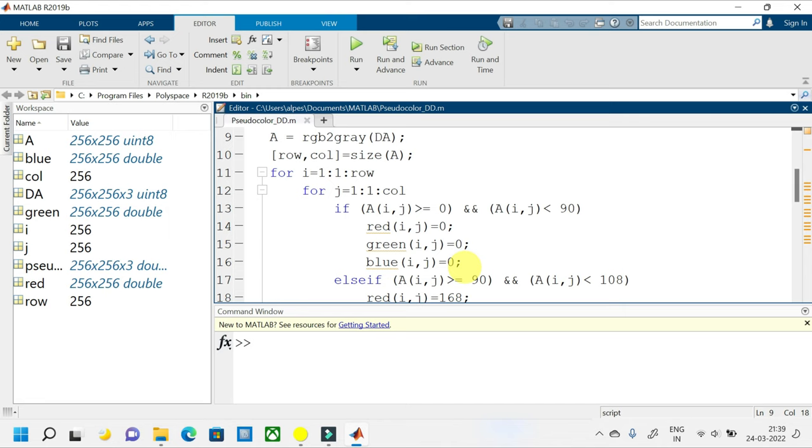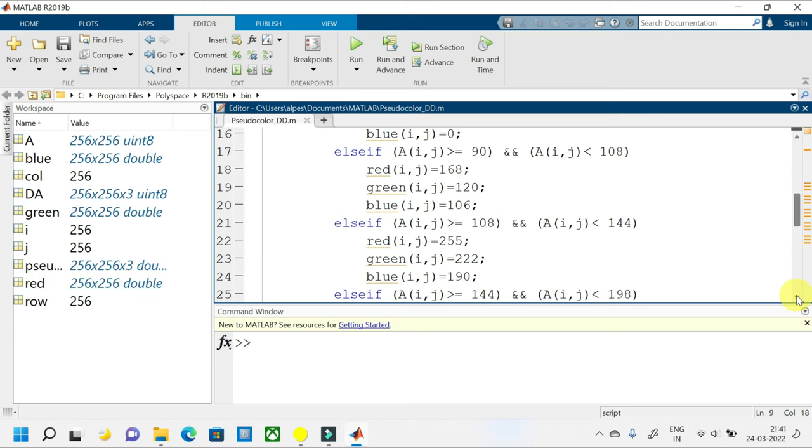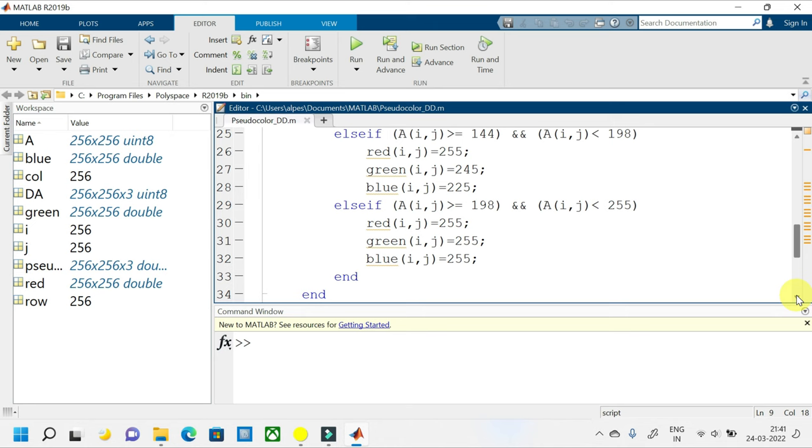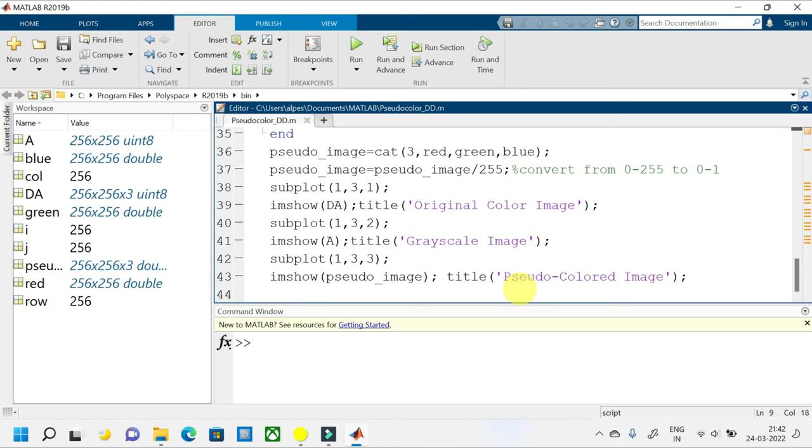Now I am running the for loops for different rows and columns, that is different pixels, and assigning different red, green, and blue values to grayscale values. For 0 to 90 grayscale values, I have kept the red, green, and blue values as 0, that is black. Similarly, for different grayscale values, I have assigned values of different red, green, and blue colors. So I have assigned only three different colors other than black, that is 0, and white, that is 255. Finally, the RGB image is formed by cat or concatenate operator to stack the images. Here, 3 is the dimension of the stacking, and so red, green, and blue planes are stacked above one another to form a 3-plane RGB image.